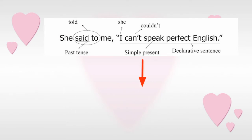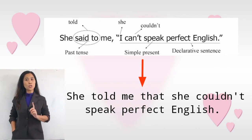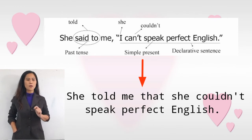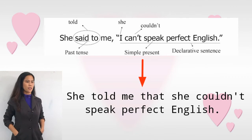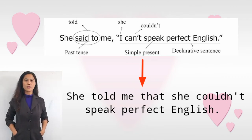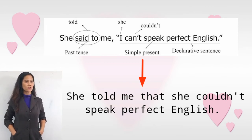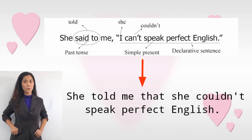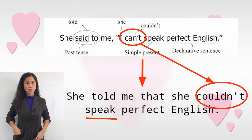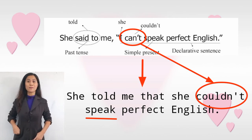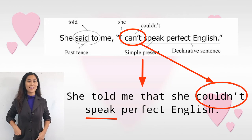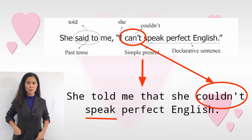So the indirect speech form is: 'She told me she couldn't speak perfect English.' You might ask why 'speak' wasn't changed to past tense — simply because there is an auxiliary verb, 'can't.' The verb that follows an auxiliary must always be in the base form. So even though this is simple present, you cannot change 'speak' to past — you only transform 'can't' into 'couldn't.'